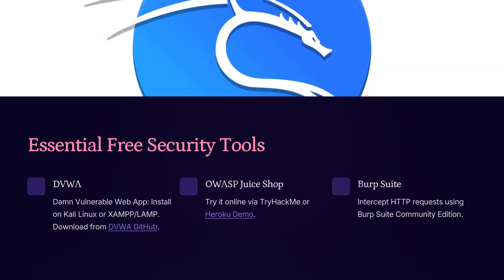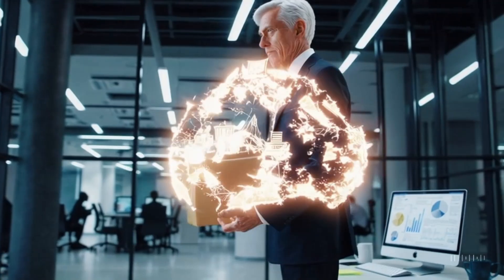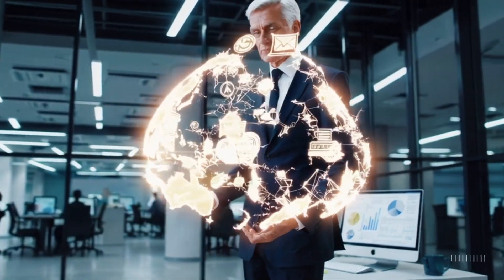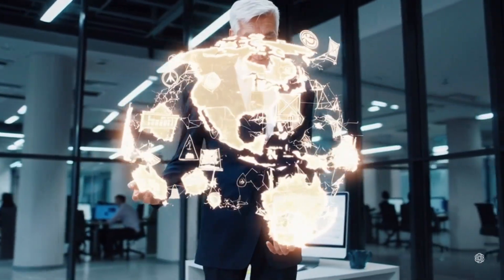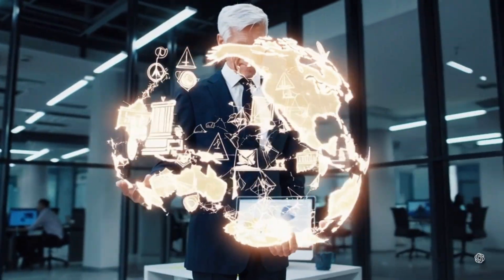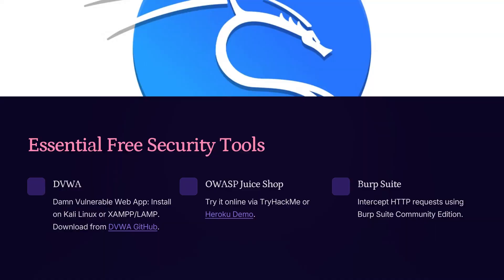Lastly, Burp Suite Community Edition is a powerful tool that helps you intercept and analyze HTTP requests. It acts like a middleman between your browser and the web server, so you can see and manipulate traffic, which is super useful for discovering security flaws. With these tools — DVWA, Juice Shop, and Burp Suite — you'll have everything you need to practice attacks, analyze vulnerabilities, and build a strong understanding of web app security.